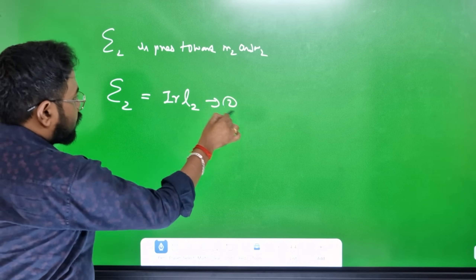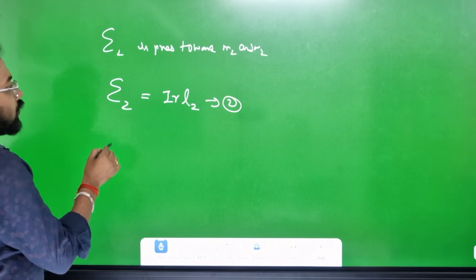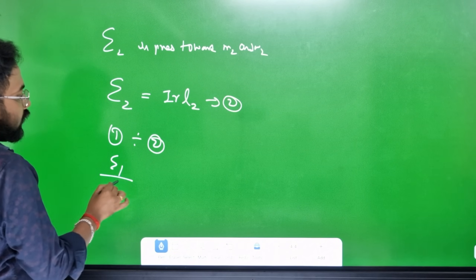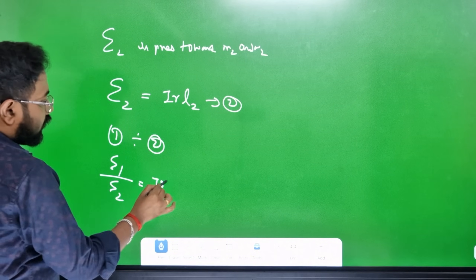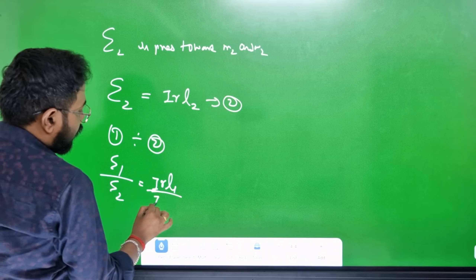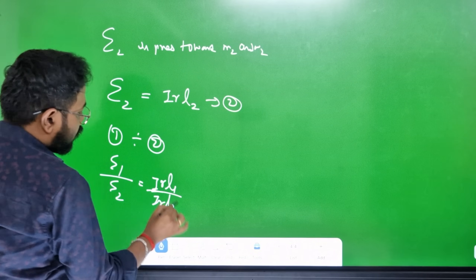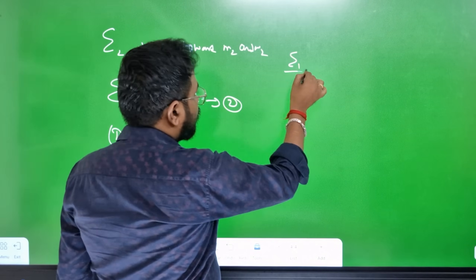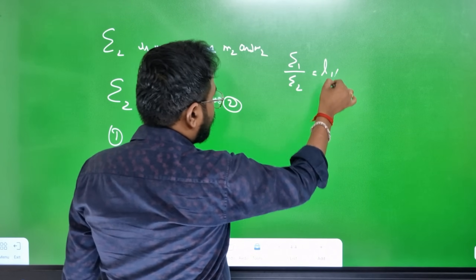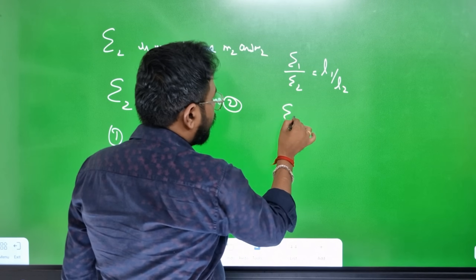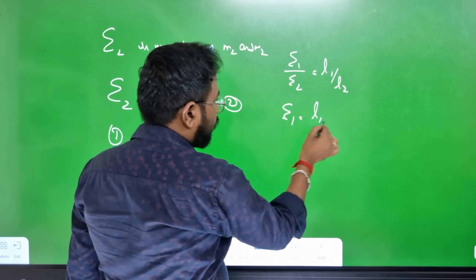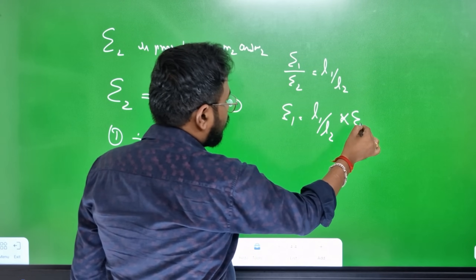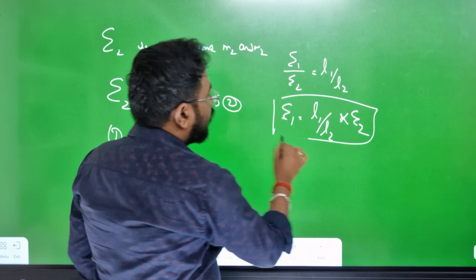When the EMF of E2 is connected through M2 and N2, the balance length is L2. So E2 equals I·R·L2 — this is the second equation. Dividing equation 1 by equation 2: E1 divided by E2 equals I·R·L1 divided by I·R·L2. IR cancels, giving E1 by E2 equals L1 by L2.